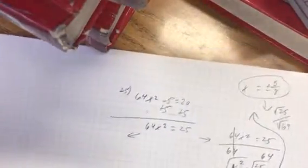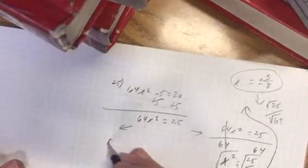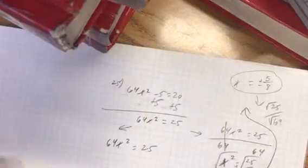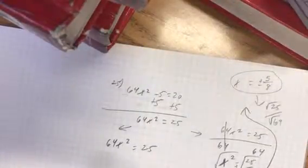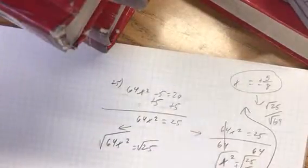Another way to solve it, which depends on how you want to look at it, is you've got 64x squared equals 25. And you do the square roots right now, because you're like, wait a minute, 64x squared can be squared out right now, and so can 25.